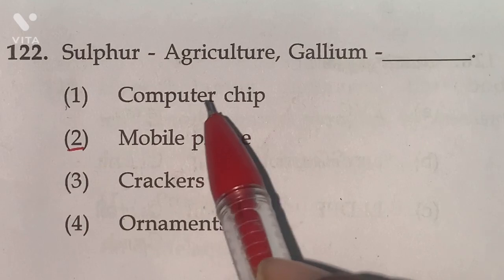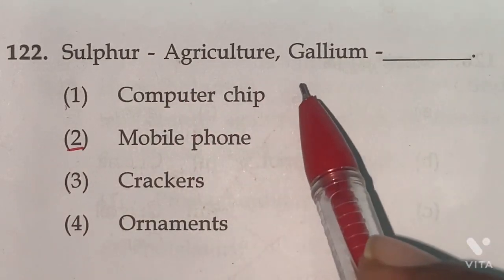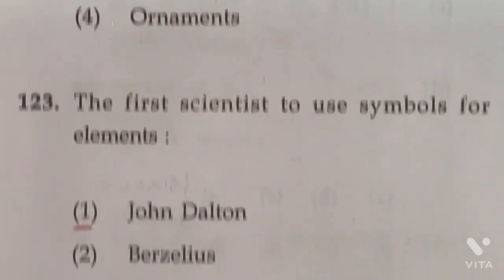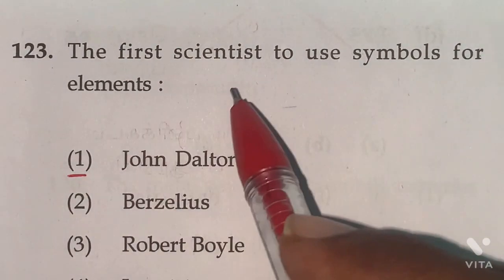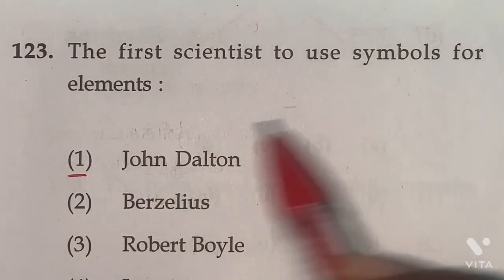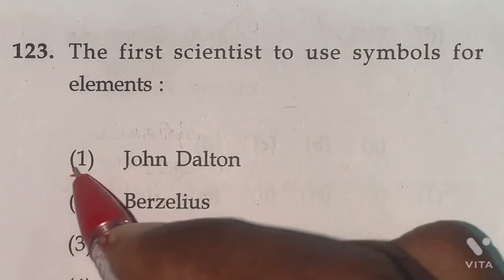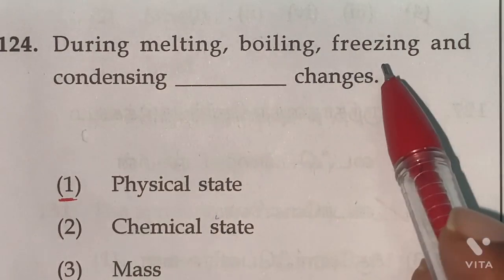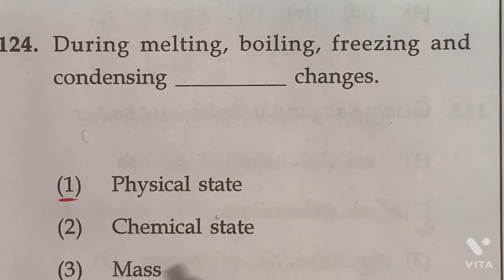122. Sulfur used in agriculture, gallium used in mobile phone for amplifiers. Option 2 is the right answer. 123. The first scientist to use symbols for elements, John Dalton. Option 1 is the right answer. 124th. During melting, boiling, freezing and condensing, physical state changes. So option 1 is the right answer.